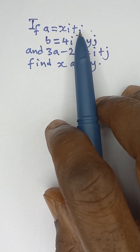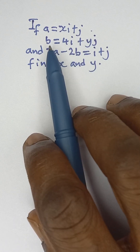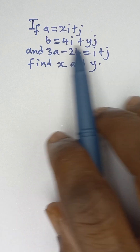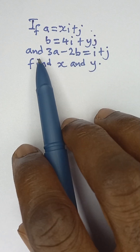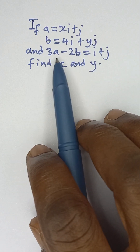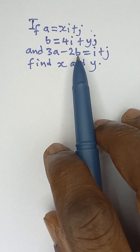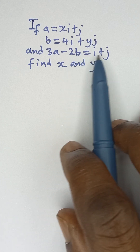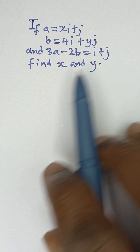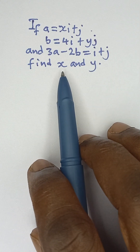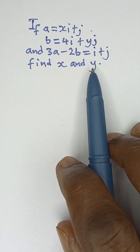If vector a is this and vector b is this, and 3a minus 2b is equal to i plus j, we will find X and Y.